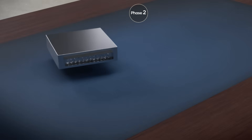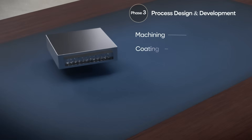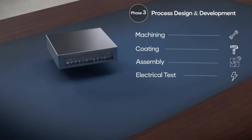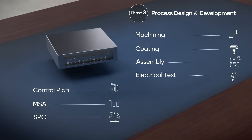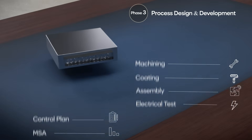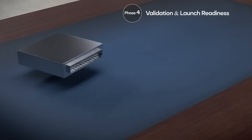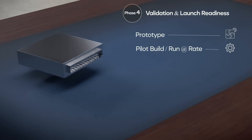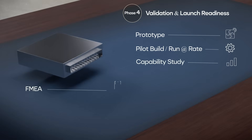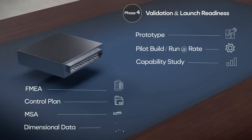Now we plan how to build it — this is phase three, process design and development. We define each step: machining, coating, assembly and electrical testing, and analyse risks through PFMEA. We create a control plan, verify our gauges and testers with MSA, and use SPC to monitor critical parameters like torque or leakage. Suppliers align their own APQP activities with ours to stay in sync. Then in phase four, validation and launch readiness, we run prototypes and pilot builds, test capacity with run-at-rate, and perform capability studies. We compile the PPAP package — FMEA, control plan, MSA, dimensional data — and submit for customer approval. Once approved, we're ready to launch.